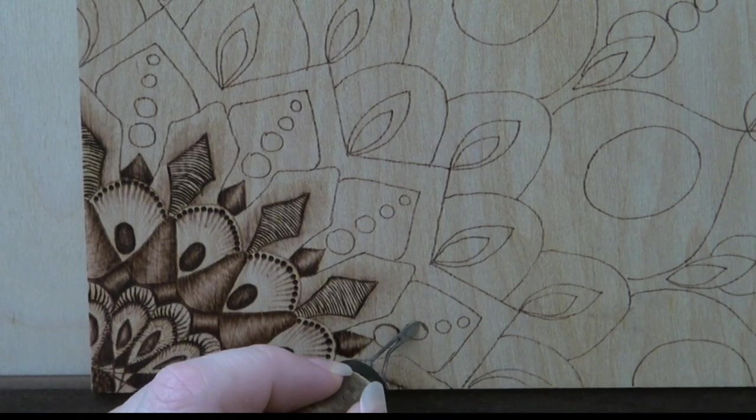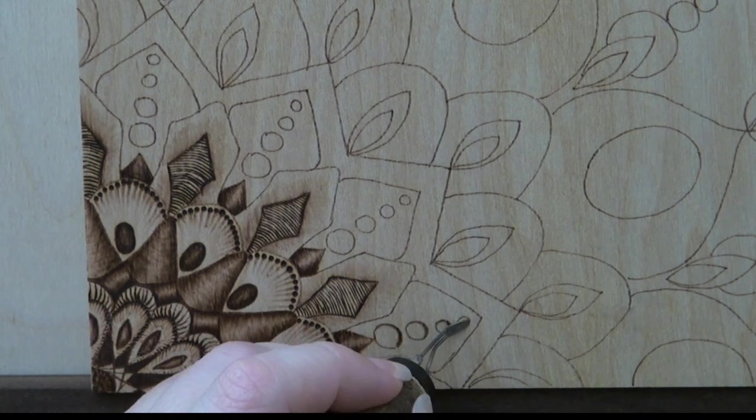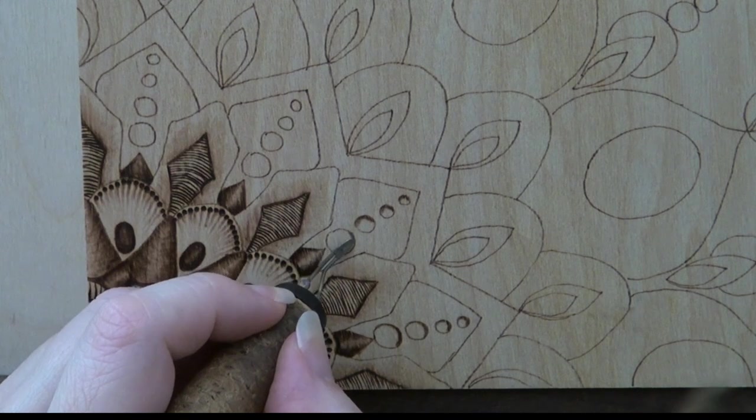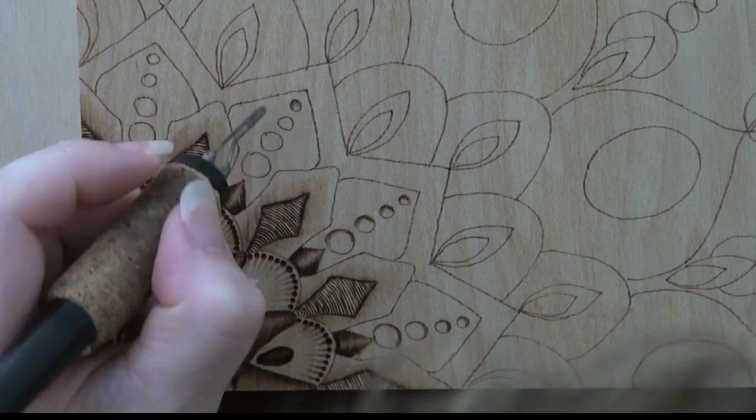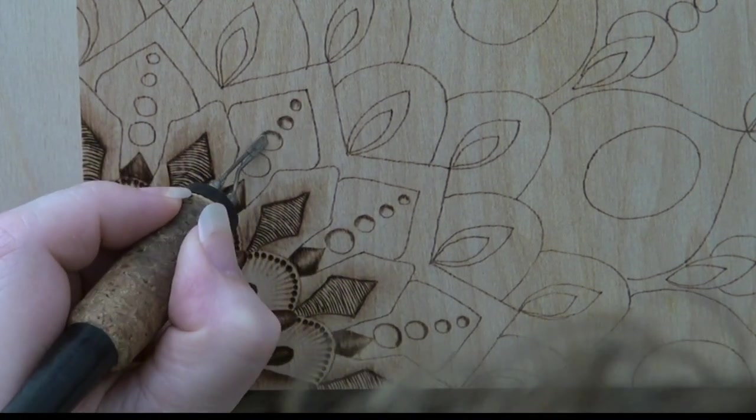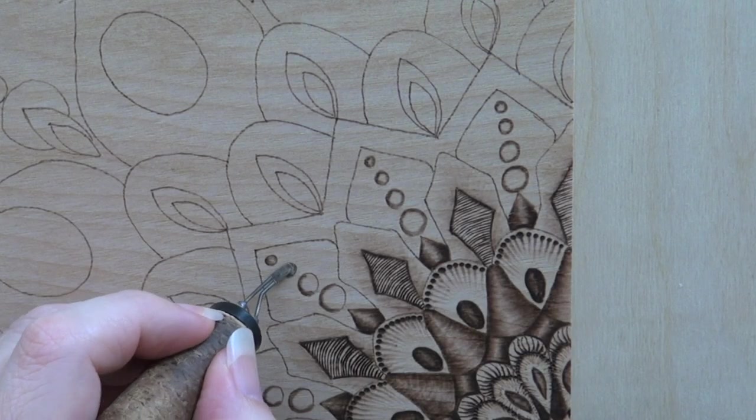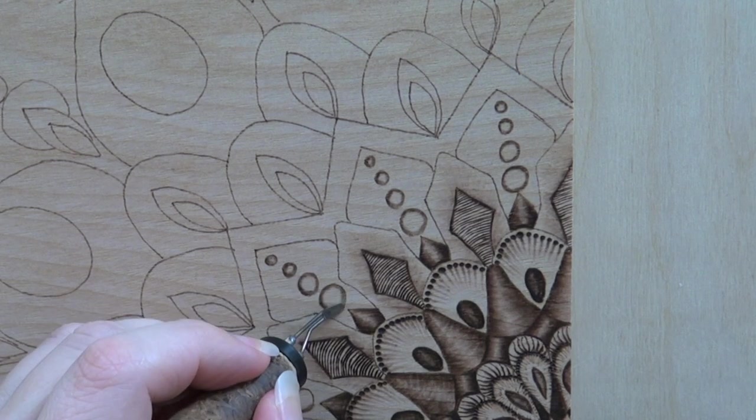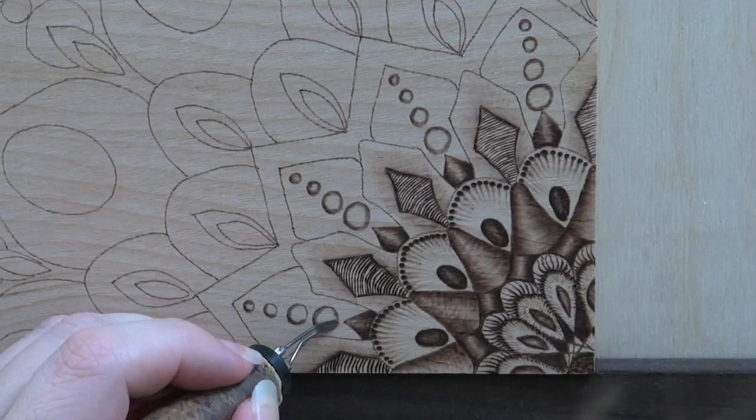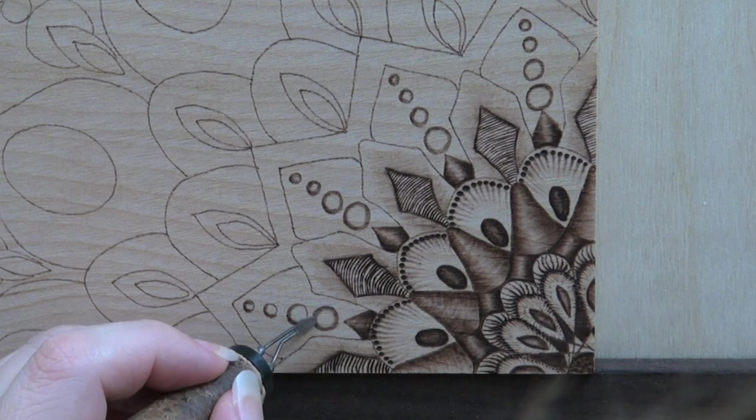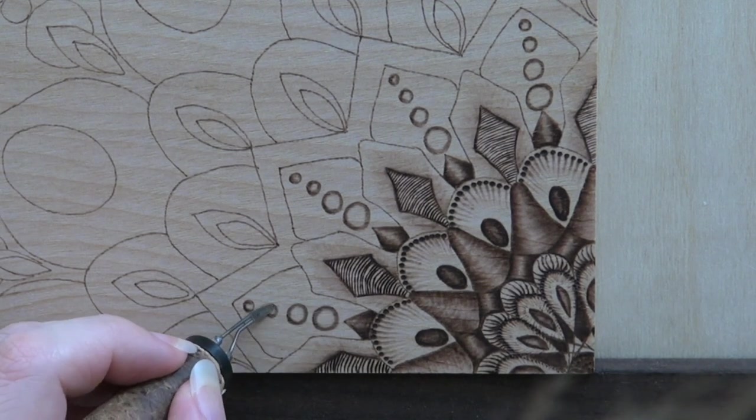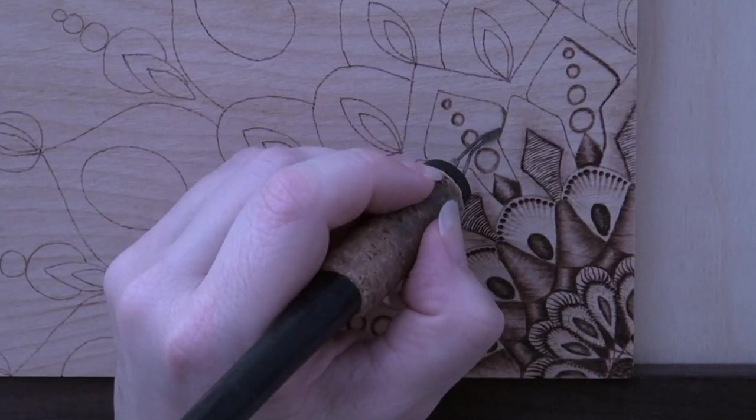Burn darkly along the edges of the circles. It is easier to burn the circles in sections versus trying to burn them in one long continuous line. I also find that it is quicker to burn the same section of all of the circles, rotate the board, and then burn in another section on the circles. Leave the center of the circles unburned.